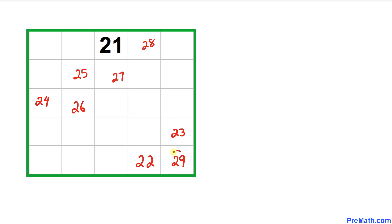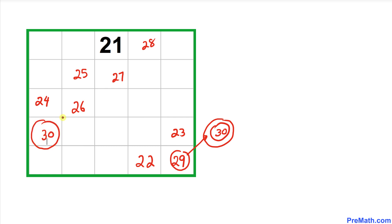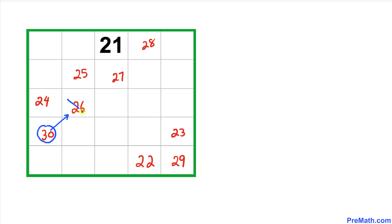From 29 we move diagonally to 30, but 30 is also outside the square so it wraps to the opposite side. Then from 30 we try to go diagonally but that cell already has a number, so we move downward instead and place 31.